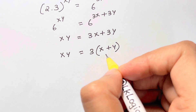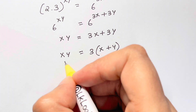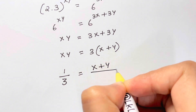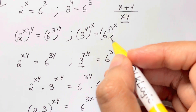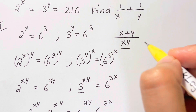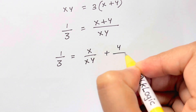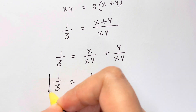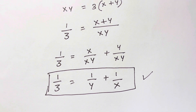Since xy equals 3 times (x plus y), dividing both sides by 3 gives 1 third equals (x plus y) over xy, which equals x over xy plus y over xy, which is 1 over y plus 1 over x. So 1 over x plus 1 over y equals 1 third — the same answer! Let me know in the comments which method you prefer, and if you have any suggestions please write them down. Thank you so much, bye bye, take care.